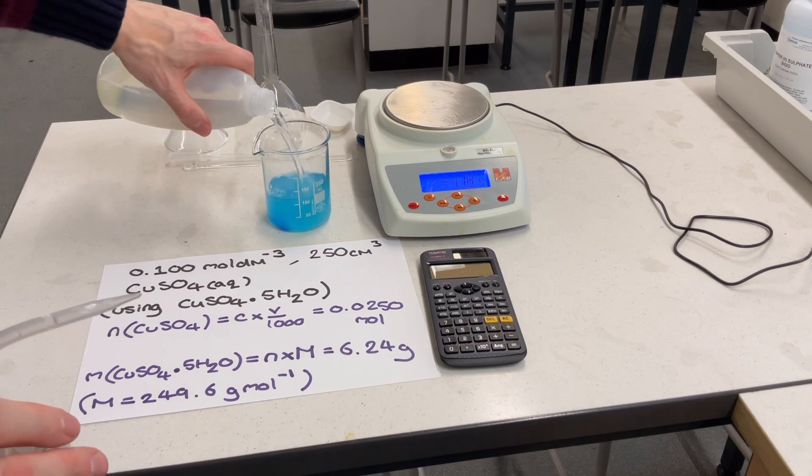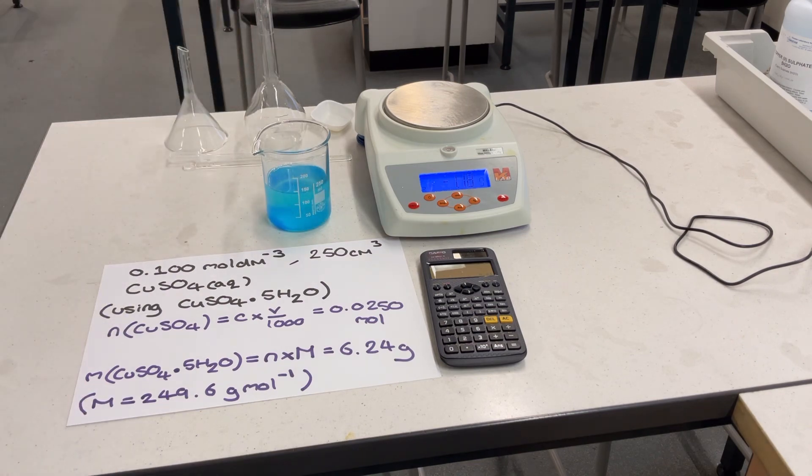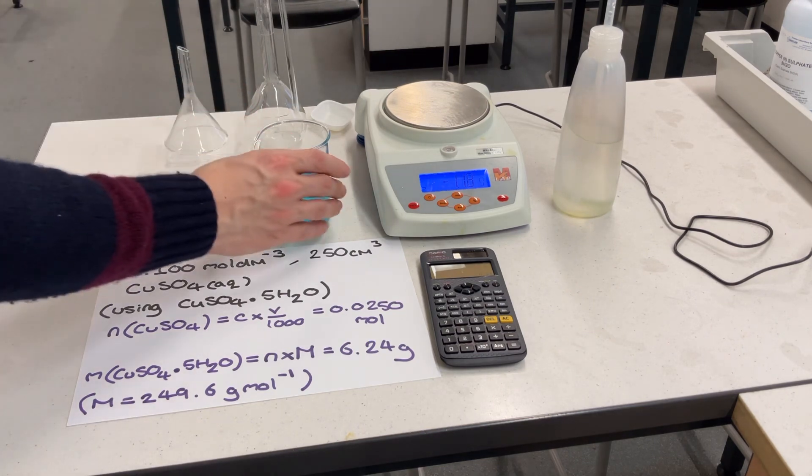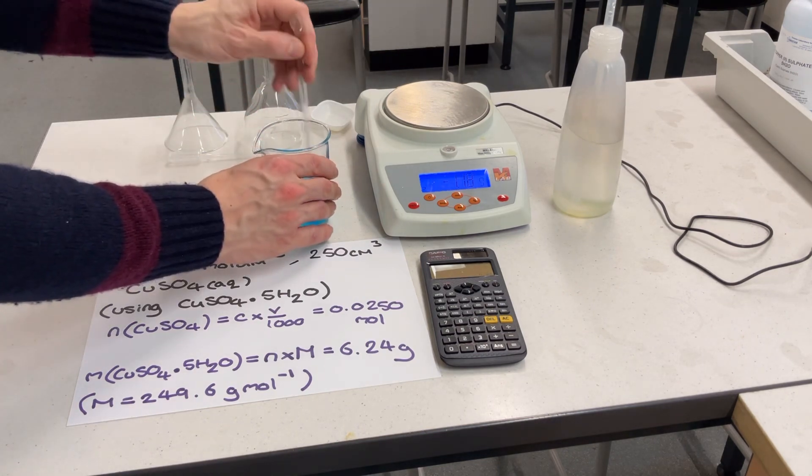On a side note here, I often get asked about how much water you should use for this. If you're preparing a 250 centimetre cubed standard solution, I recommend using around 150 centimetres cubed of water at this stage.